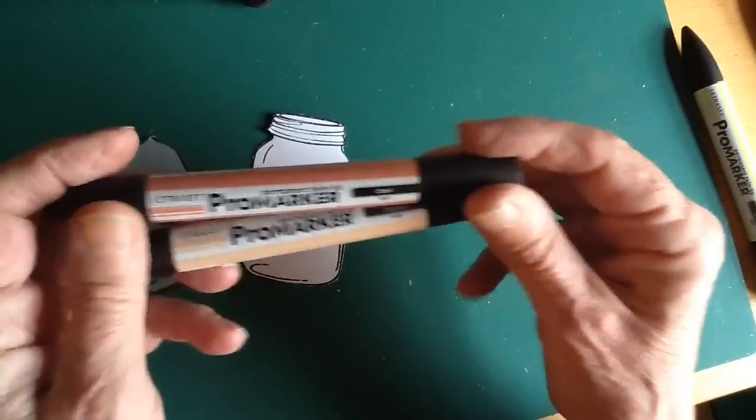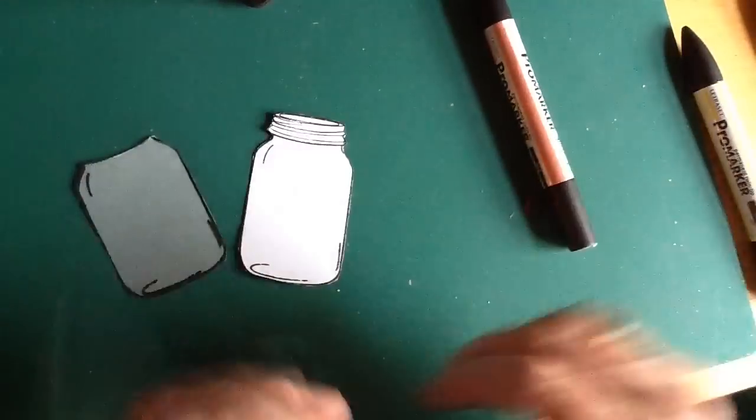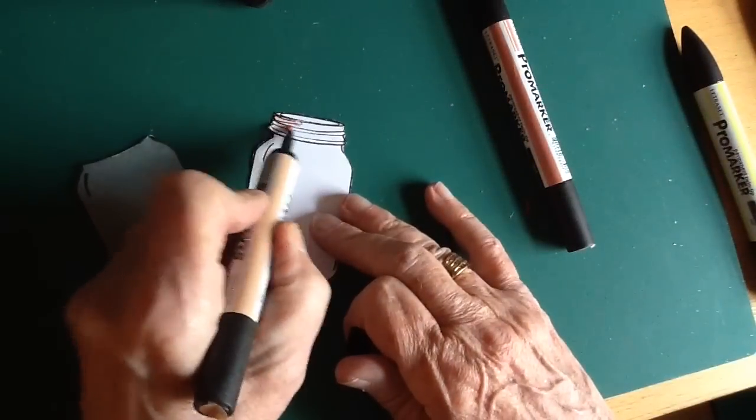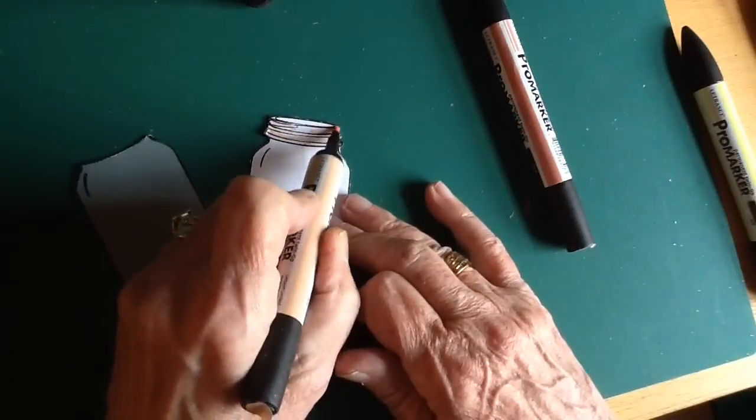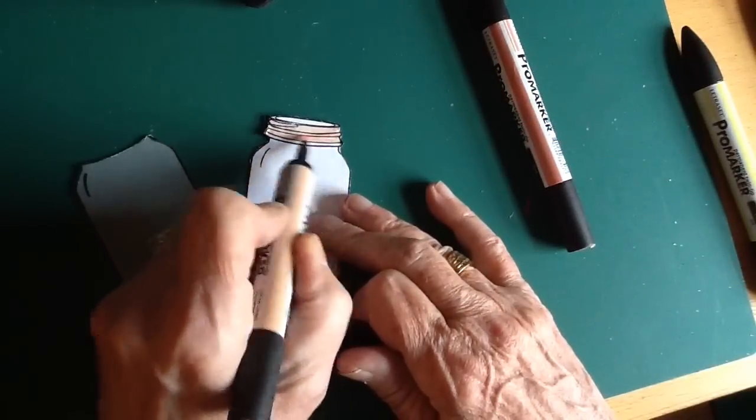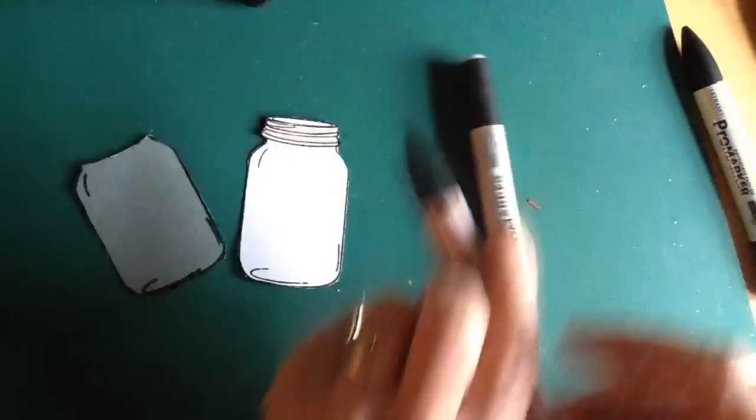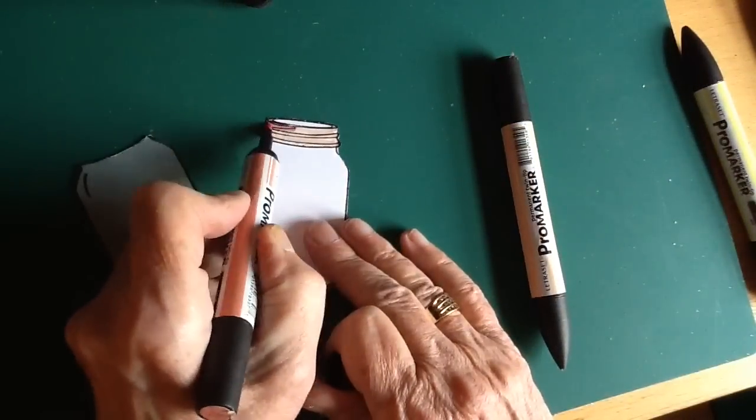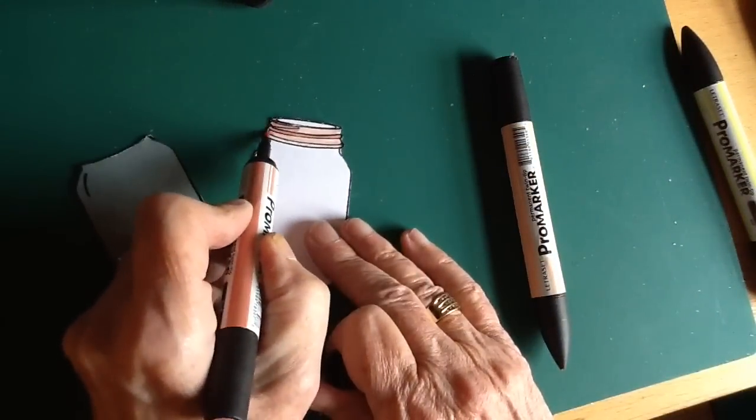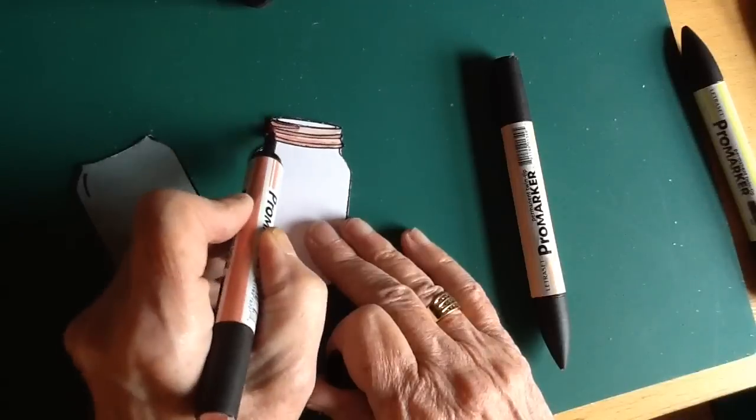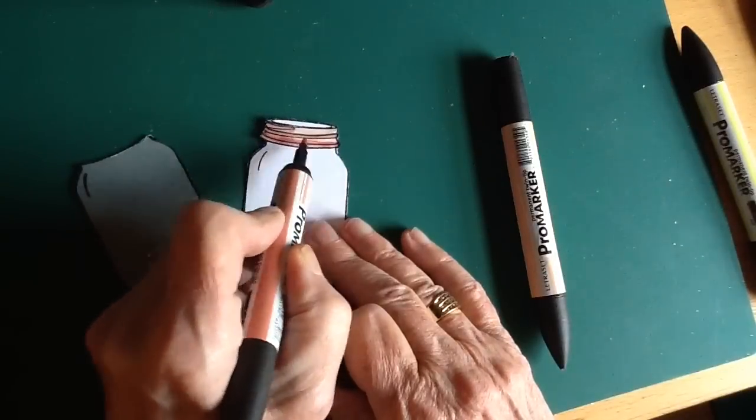So I'm just going to color in the top of the jar. I'm using Coral Promarker and Oatmeal, and I'm not spending a lot of time on this. I think life's too short frankly to spend a lot of time on coloring this sort of thing. So I'm just adding a little bit of shade.